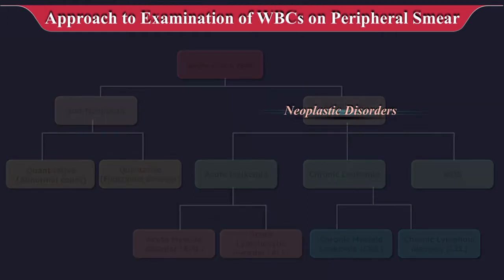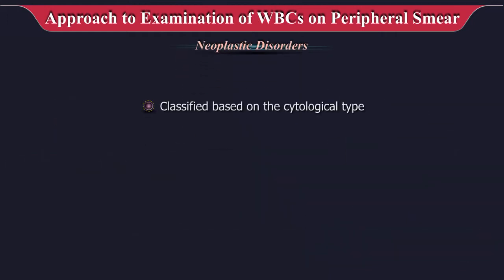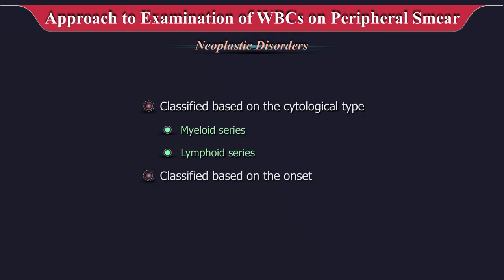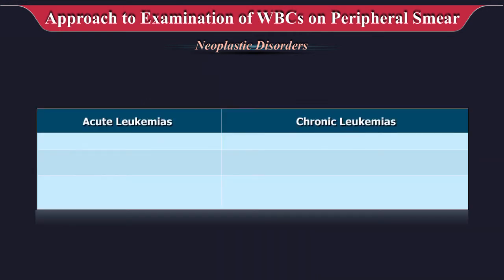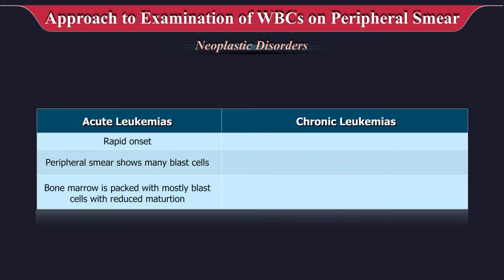Neoplastic disorders are clonal disorders which can be classified based on the cytological type — myeloid or lymphoid series — and based on onset they can be classified into acute leukemias and chronic leukemias. It is important to differentiate between these types. Acute leukemias have a rapid onset; the peripheral smear shows many blast cells and the bone marrow is packed with mostly blast cells with reduced maturation.